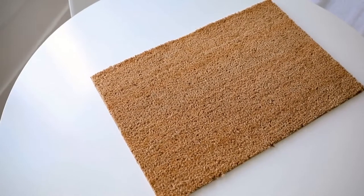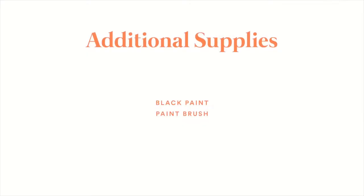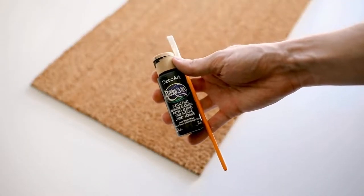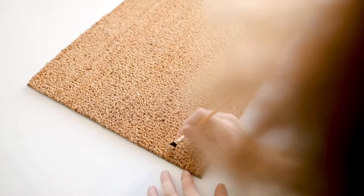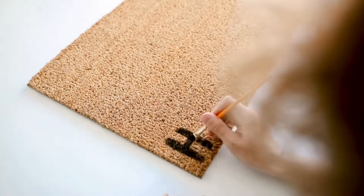All righty guys, so kicking off this video with a super simple project. We're using the TRAMPA doormat and for additional supplies you're just going to be needing some black paint and a paintbrush of your choice. This is all going to be freehand, it's super simple and easy. Honestly guys, you can find so many funny doormat ideas on Google if you type in doormat ideas.